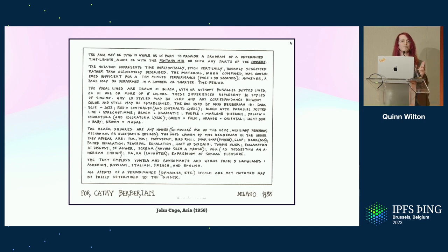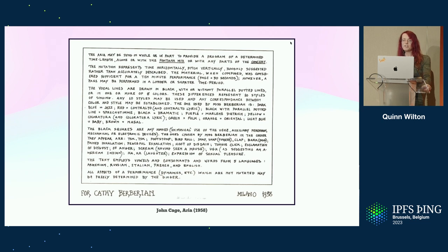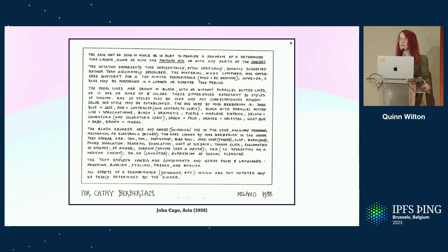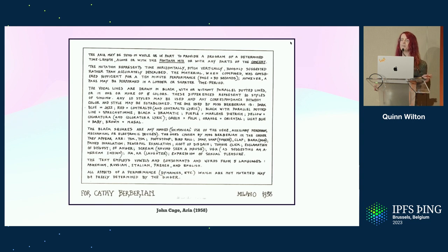Included with the sheet music are these instructions, and for every aspect of the song they specify, they intentionally leave just as many open and freely determined by the singer. With music like this, Cage pioneered an approach that he called indeterminacy, which he defined as the ability of a piece to be performed in substantially different ways.